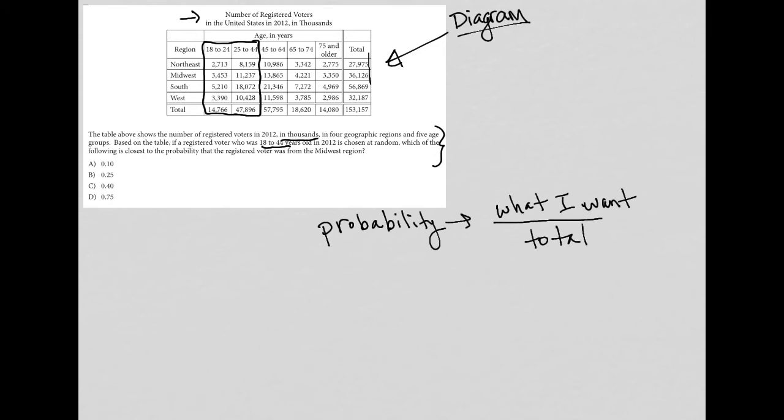So usually the total is easier to find first. Honestly, they're both easy to find, but I like to write in the total first. So since I'm looking at ages 18 to 44, my total for ages 18 to 44 year olds come from these bottom numbers here.